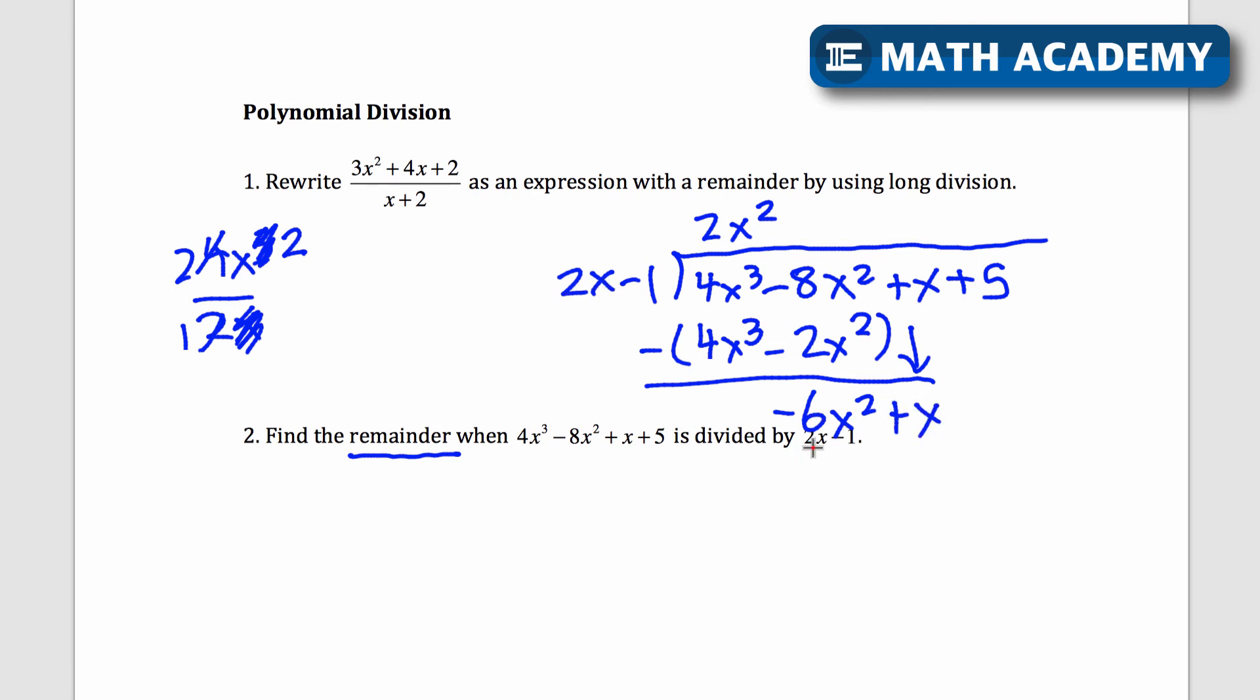2x goes into negative 6x squared negative 3x times. I'll multiply this by all this. We'll get negative 6x squared plus 3x and I will subtract all of that. Negative 6x squared plus 6x squared cancel out. x minus 3x is negative 2x. And then I will bring down the next term.